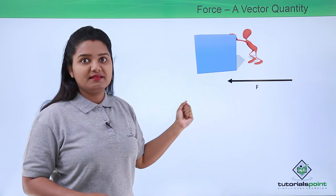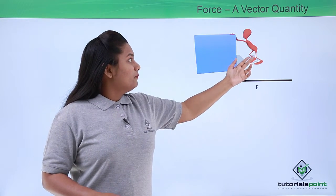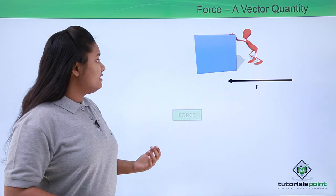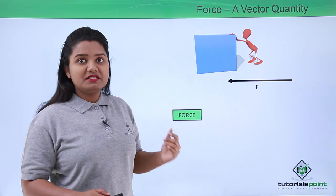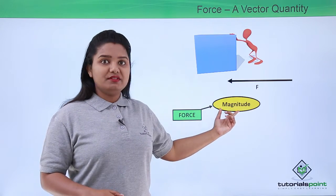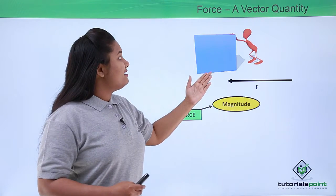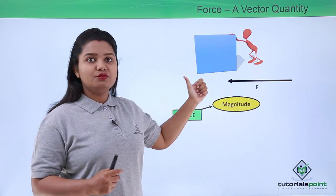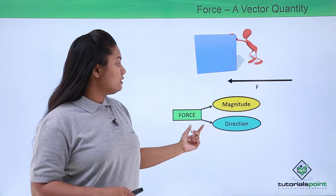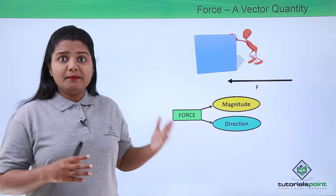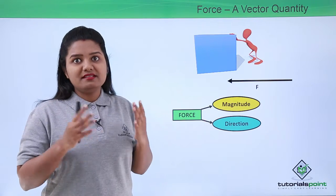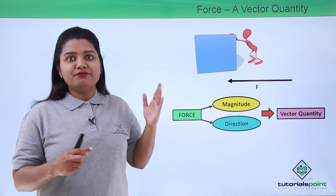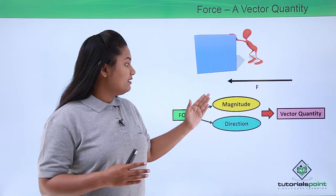The body starts moving in the direction of the applied force. The force the man applied has a particular amount, which we call its magnitude. He applied this magnitude of force in a particular direction. Whenever a physical quantity has both magnitude and direction, we call it a vector quantity. So force is a vector quantity because it has both magnitude and direction.